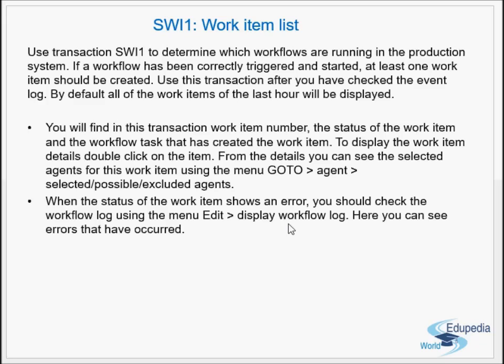To display work item details, just double-click on the item. From the details you can see the selected agents for the work item — using the menu go to Agent — to see whether they are selected, possible, or excluded agents. You can also find which workflow and which task the work item belongs to. When a work item status is Error, check the workflow log using Edit > Display Workflow Log to see what errors occurred.